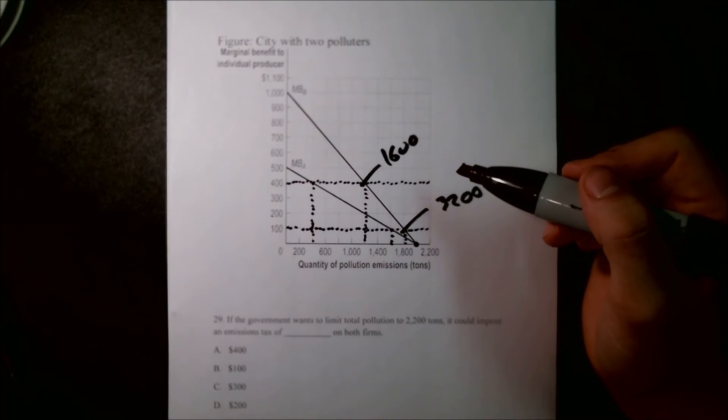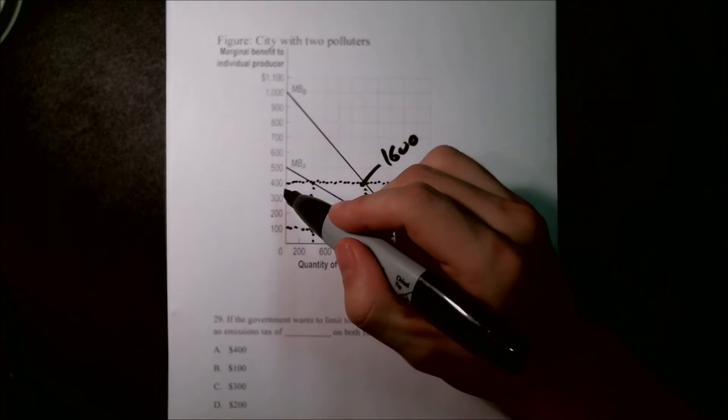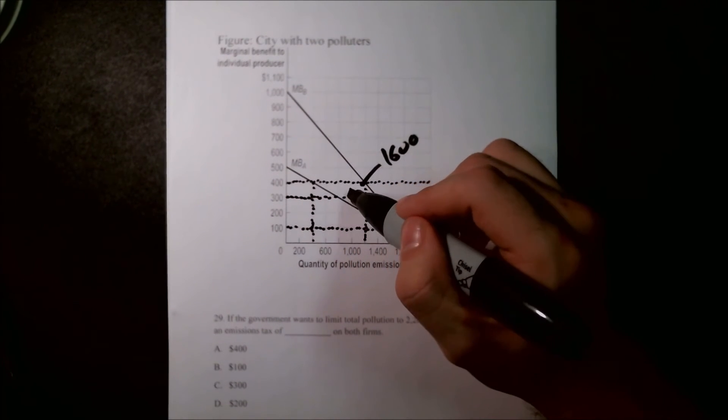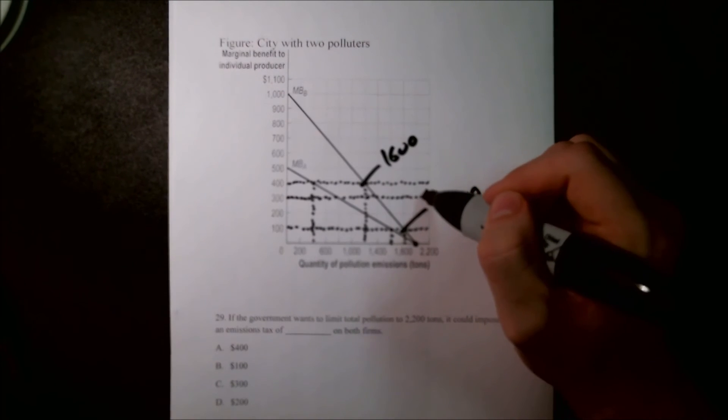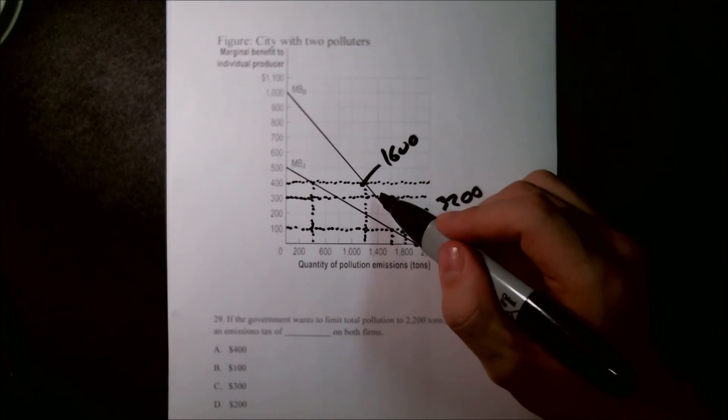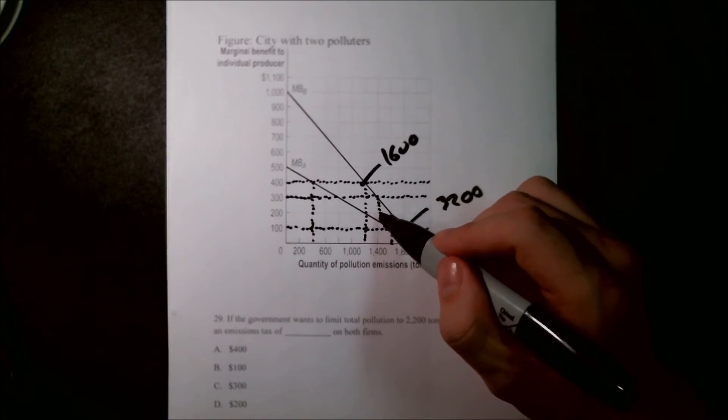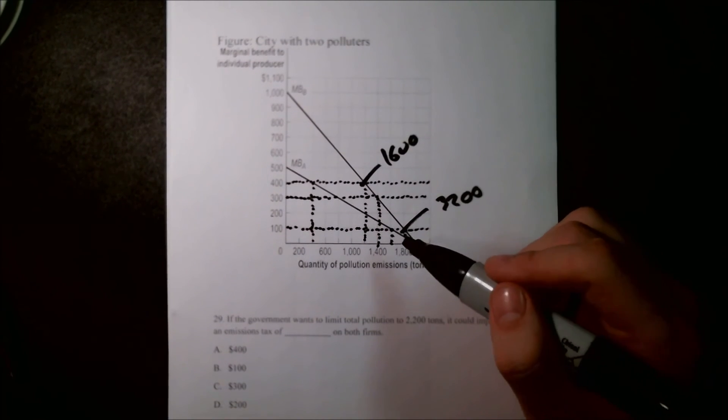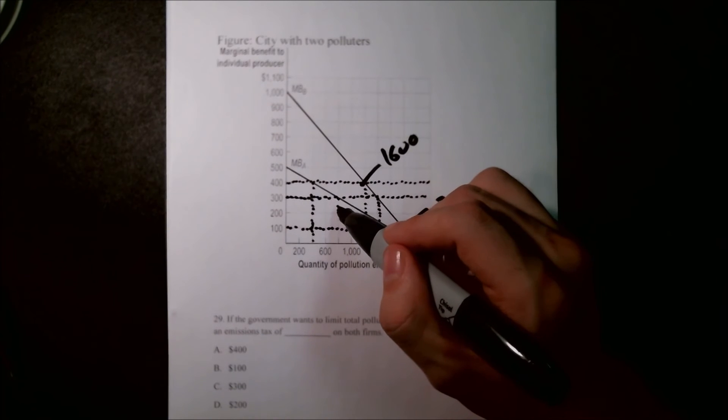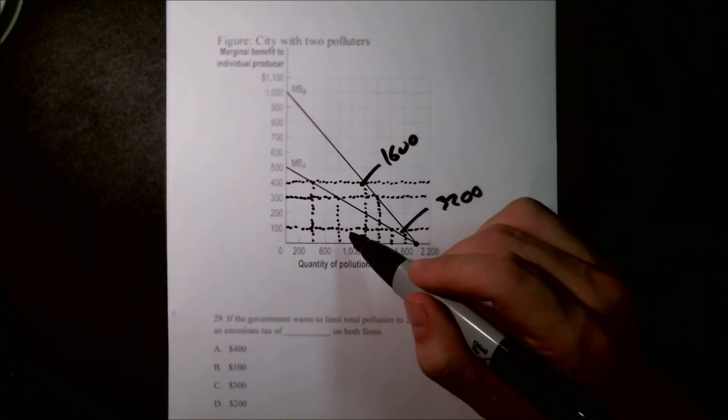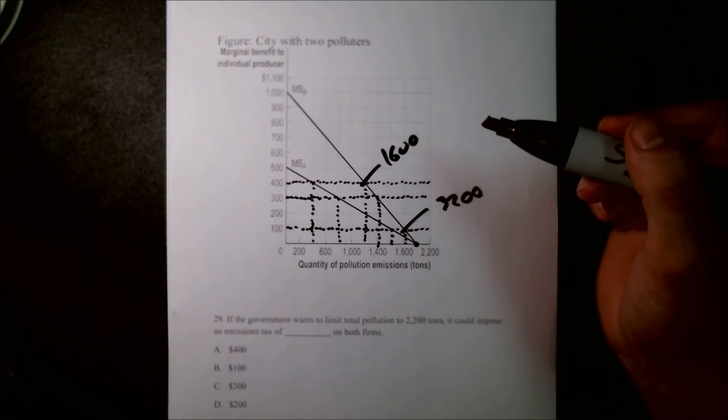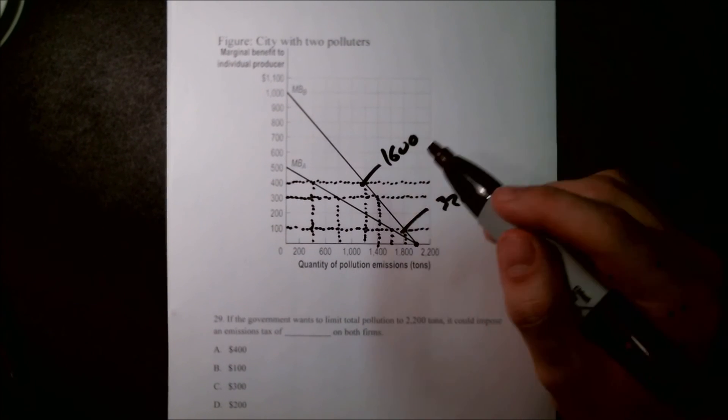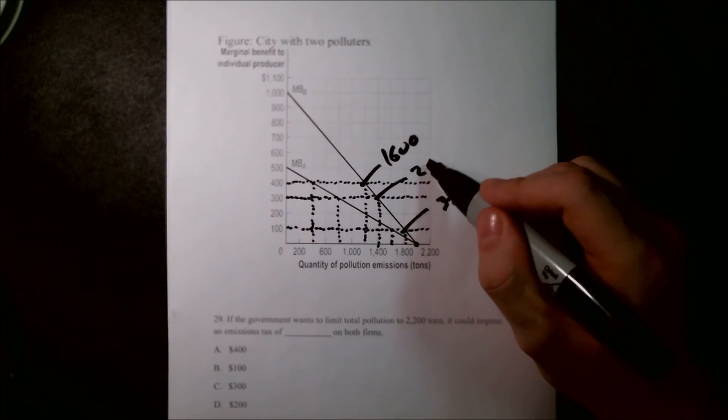So now we're going to go on to C, which gives us $300. So we're going to go ahead and try $300, raise that up, the tax of $300. And firm B is going to produce 1,400 tons of pollution and firm A is going to produce 800. Now, 800 plus 1,400 is going to give us 2,200, which is what we're after.